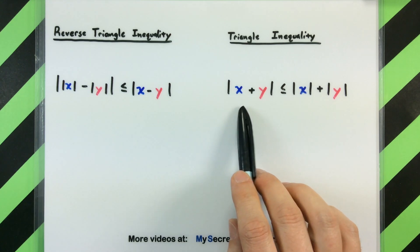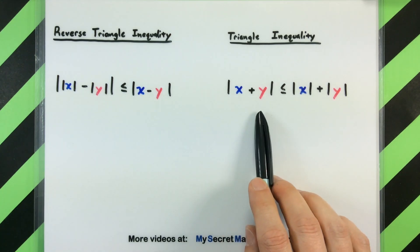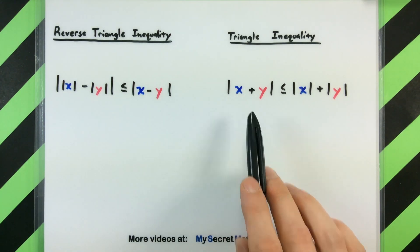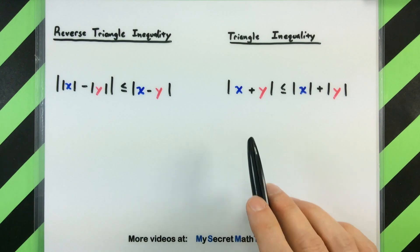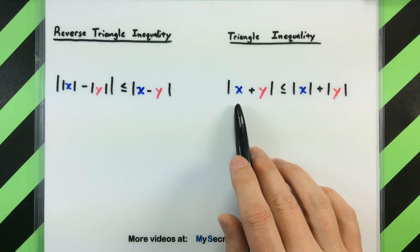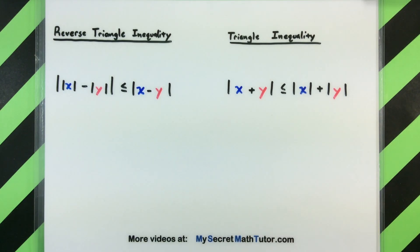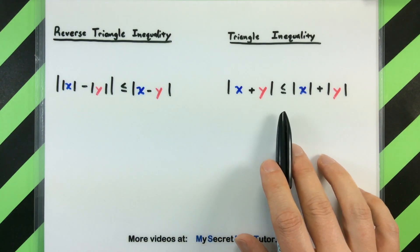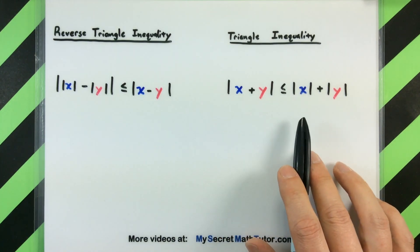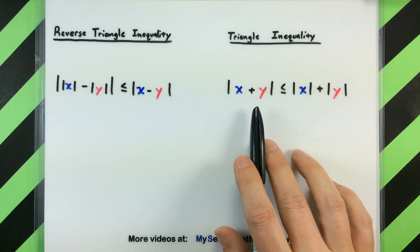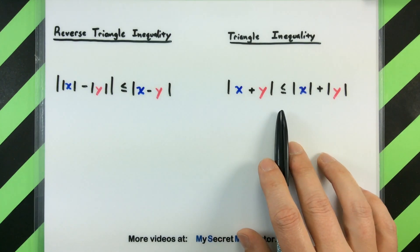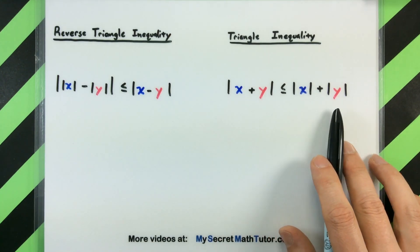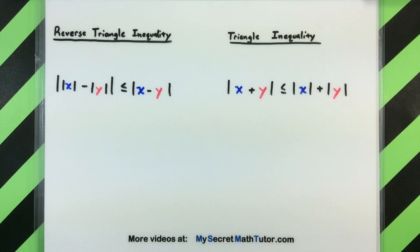In the regular old triangle inequality, we're looking at the absolute value of two numbers, and if we want to break that up into the absolute value over each individual number, it's going to make something larger. So the absolute value of x plus y is less than or equal to the absolute value of x plus the absolute value of y.